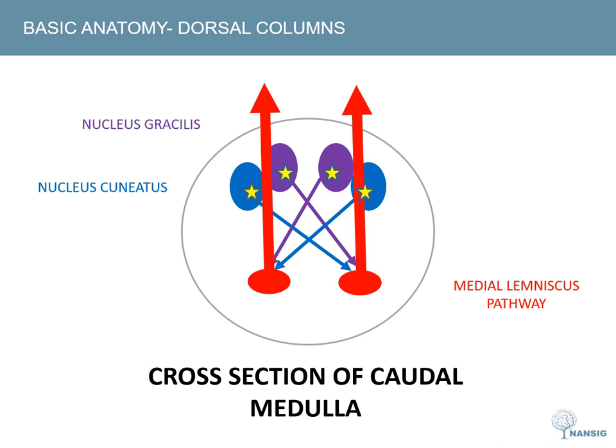From the thalamus, fibres are sent all over the brain, but a good proportion go towards the sensory cortices — particularly S1, which is on the postcentral gyrus.